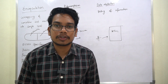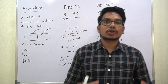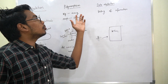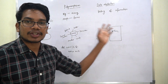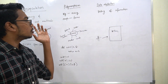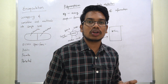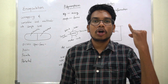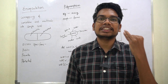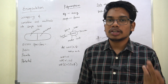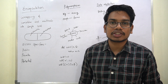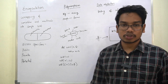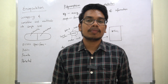Hi and welcome to Python Life YouTube channel. Today's topic is Encapsulation, Polymorphism, and Data Abstraction. These are the OOP pillars. You have types of OOP like class, object, inheritance, Encapsulation, Polymorphism, and Data Abstraction.